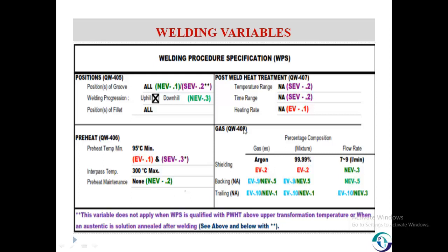Next is preheat. Preheat has two variable types. Essential variable QW406.1 defines that a decrease in preheat from the qualified temperature greater than 100°F is an essential variable. When there is an impact test, an increase in preheat temperature above the maximum qualified is a supplementary essential variable. Preheat maintenance is a non-essential variable for all cases — meaning we must not cool the joint below the minimum preheat temperature during and after welding.